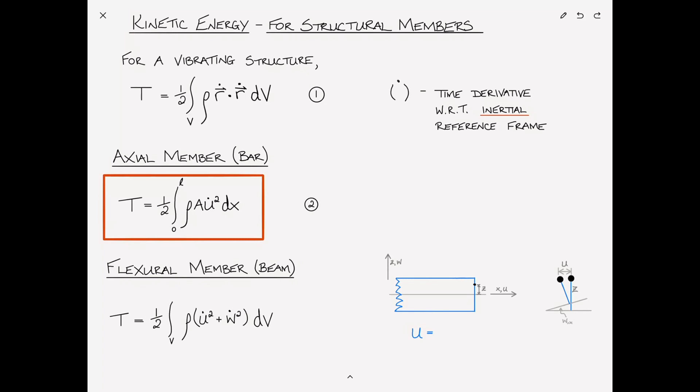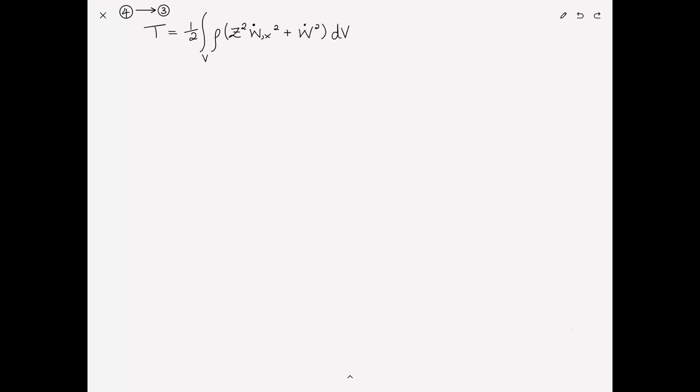So u equals negative w,x times z — a reminder that this is for small displacements. Substituting this expression for velocity (equation four) into the kinetic energy expression (equation three), we get that T equals the integral over the volume of one-half rho times (z squared w,x-dot squared plus w-dot squared) dV.